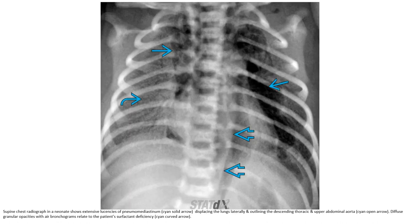Supine chest radiograph in this neonate shows extensive lucency of pneumomediastinum displacing the lungs laterally, and outlining the descending thoracic aorta and upper abdomen. Granularity of the lungs with air bronchograms related to respiratory distress syndrome.